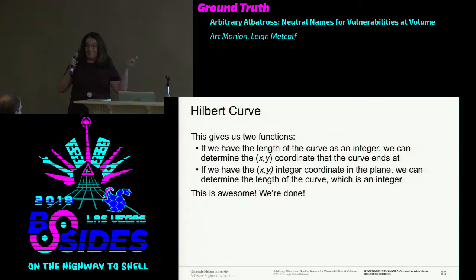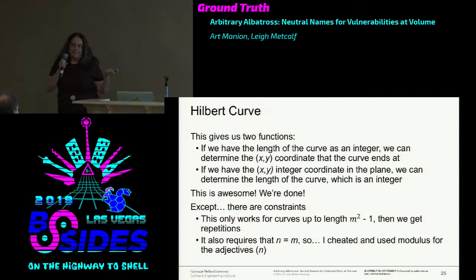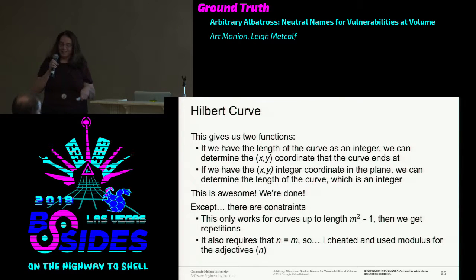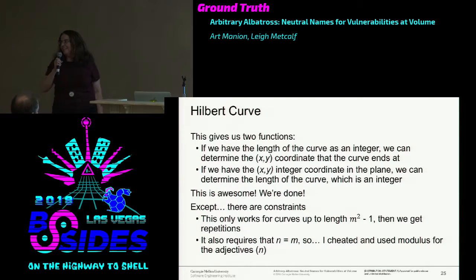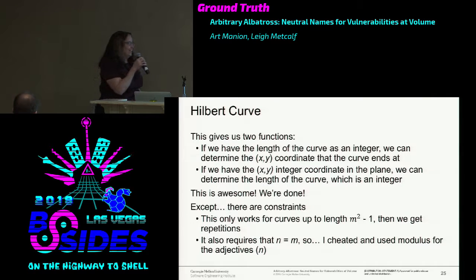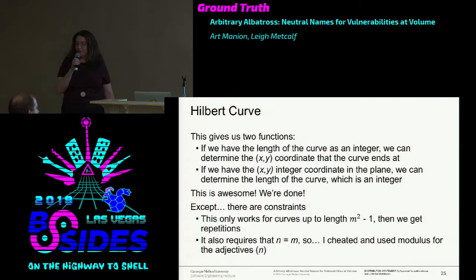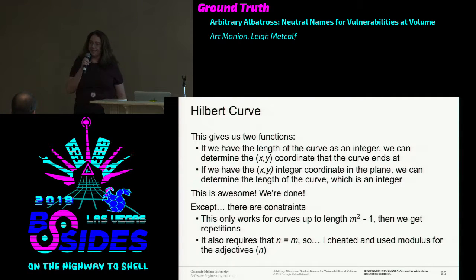Except I'm not done, because there are constraints for the Hilbert curve—there's always a constraint, that's math. This only works for curves up to length M squared minus one, where M is my number of nouns. It also requires that N equals M for N being the number of adjectives. So I kind of cheated and used some modulus and hoped it worked out for now—this is a great start, not the be-all end-all. And if I use two sets of nouns, this works absolutely fine.